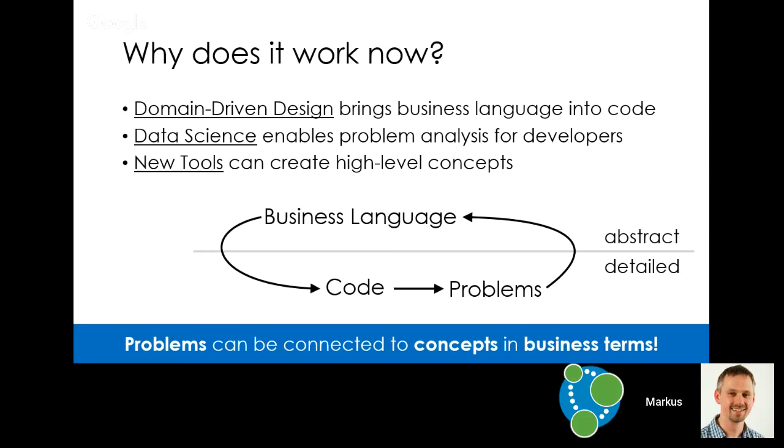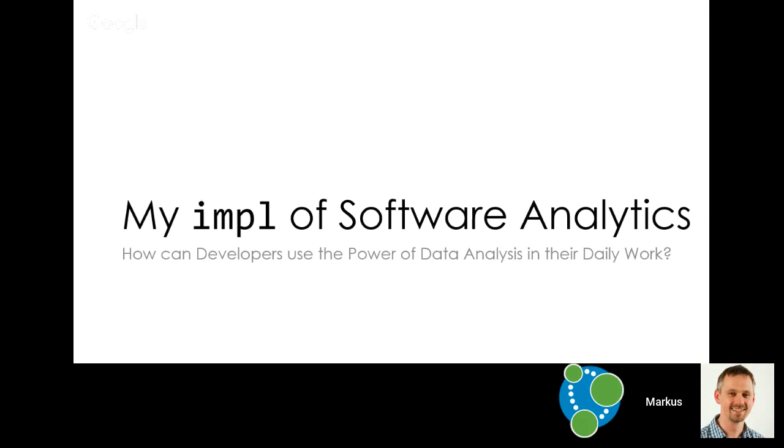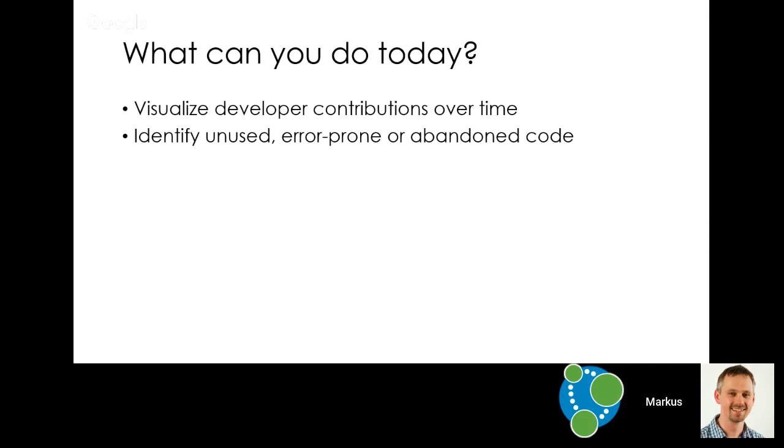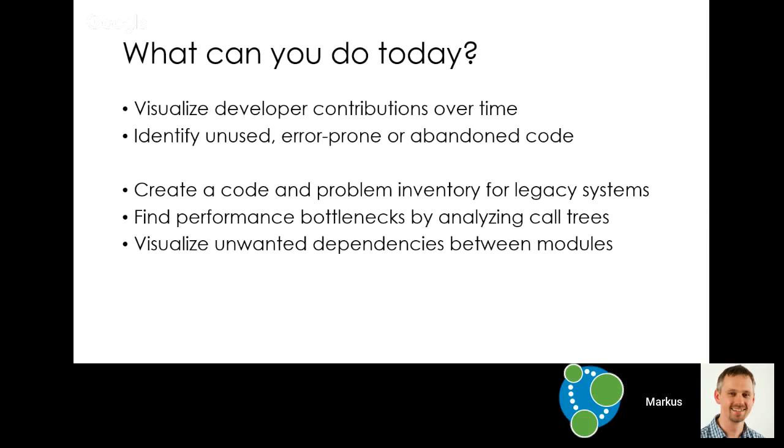Third, there are some new tools out there that can create higher-level concepts. That means that you aren't on a class level in the Java world or on a function level. But you can create some higher-level meaning. And this is the point where I say, it's really important. Because you can take all those details that are down there in your code, abstract them. And because your code is somehow in the business language, the business can understand what you're talking about. So that's the main point. Why does it work now? The problems that you see in your code can be connected to concepts that are in business terms. So let's have a look at how you can implement software analytics. The thing is, what can you do today? Is it worthwhile to go now into the topic of software analytics? I think, of course, yes.